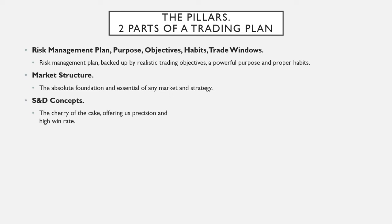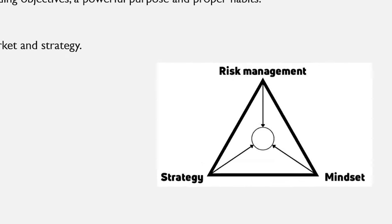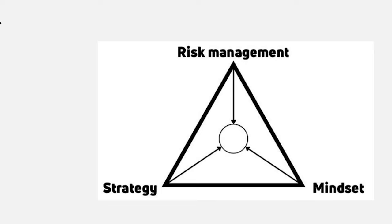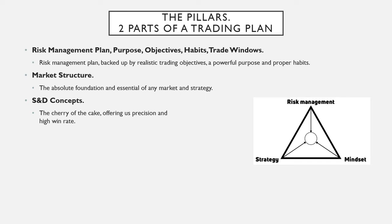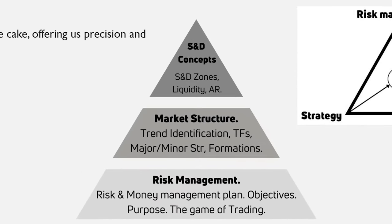After you learn the foundations of market structure, we jump on to supply and demand concepts, which offers precision and high win rate. There is a triangle: risk management, mindset, and strategy. If you are not good at any of those three parts, you are going to be pushed around. You can have a great strategy but if your mindset is bad — if you constantly go FOMO or are fearful — you're not going to succeed. Or you might have the best risk management but if your strategy doesn't work, you still won't succeed. Or if you have an amazing strategy and a brutal mindset but no risk management plan, you're still going to blow your account.